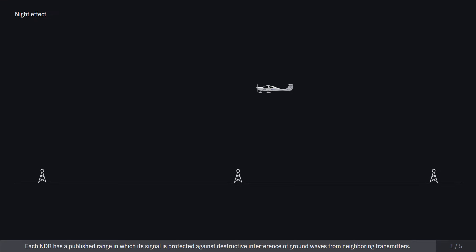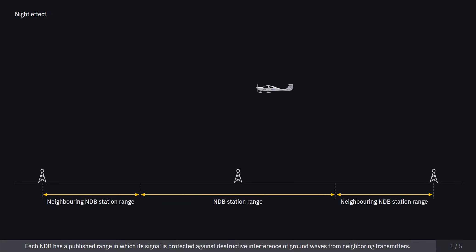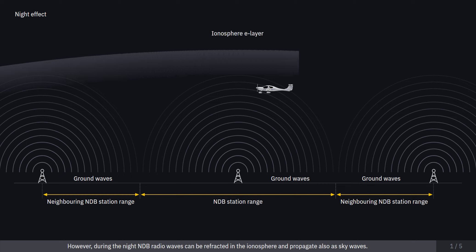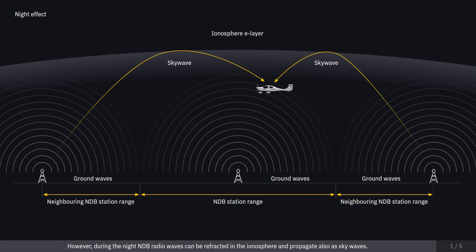Each NDB has a published range in which its signal is protected against destructive interference of ground waves from neighboring transmitters. However, during the night NDB radio waves can be refracted in the ionosphere and propagate also as sky waves.